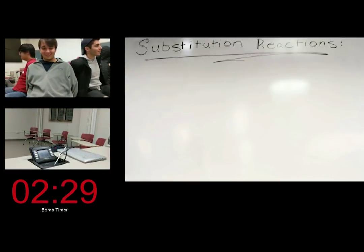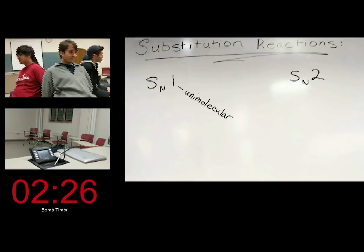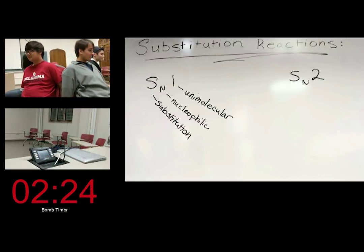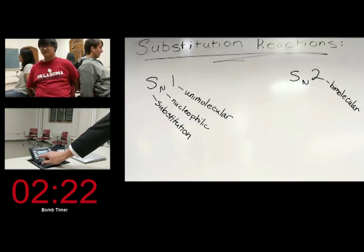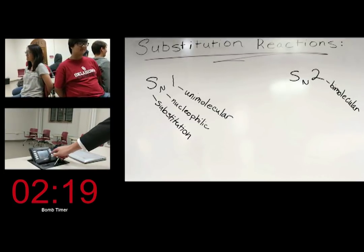There are two types of substitution reactions. SN1, which involves a unimolecular process, and SN2, which involves a bimolecular process. Don't worry, we'll explain it later.